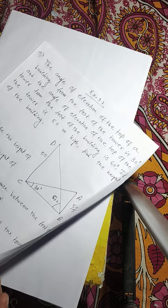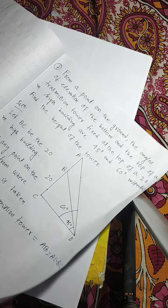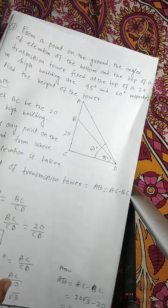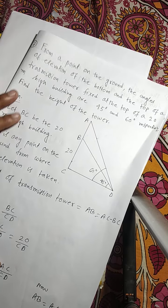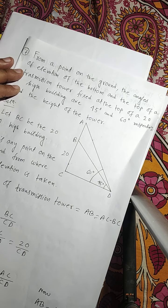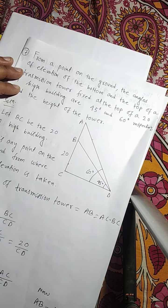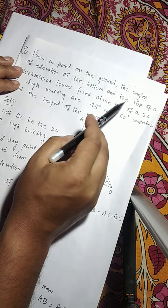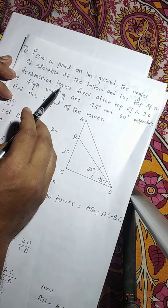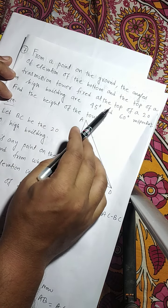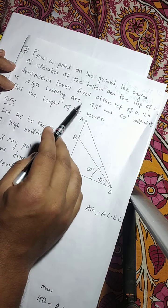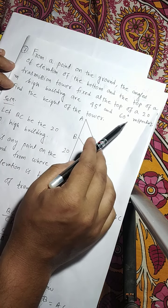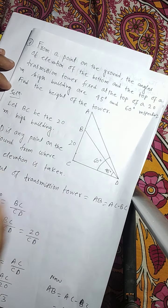Now next question is number 7. From a point on the ground, the angles of elevation of the bottom and the top of a transmission tower fixed at the top of a 20 meter high building are 45 degrees and 60 degrees respectively. Find the height of the tower.